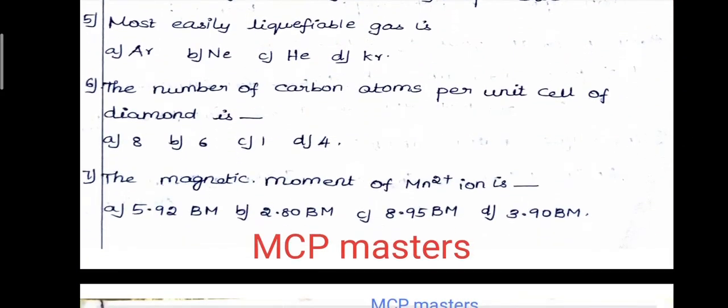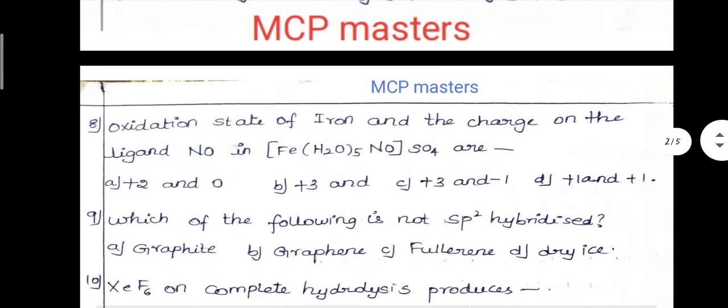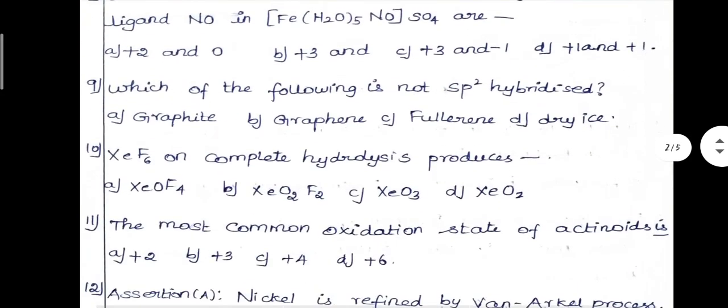So the question is about the number of carbon atoms per unit cell in diamond. This is not yet answered correctly. The answer is 8. So you have to know that.